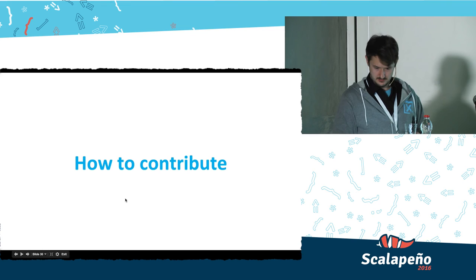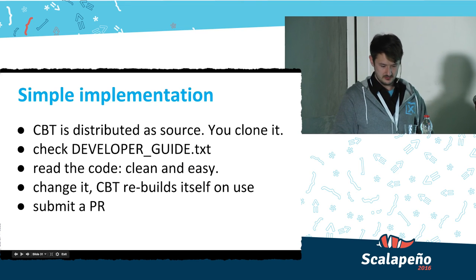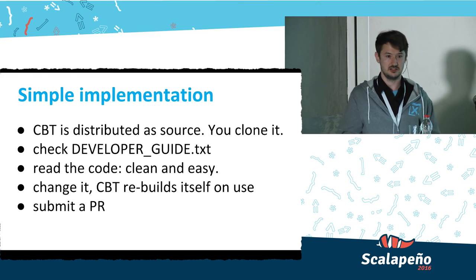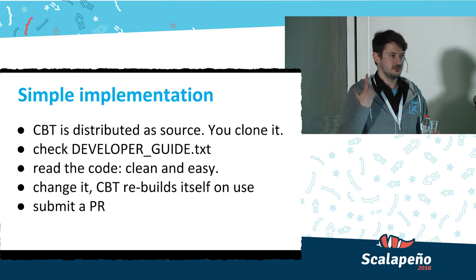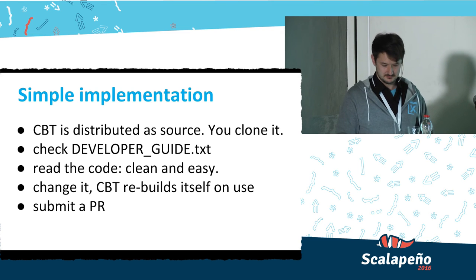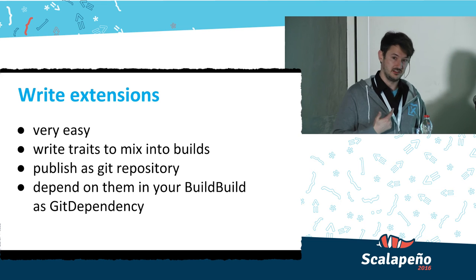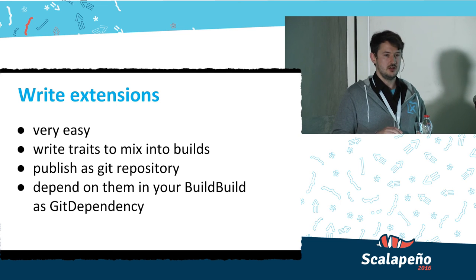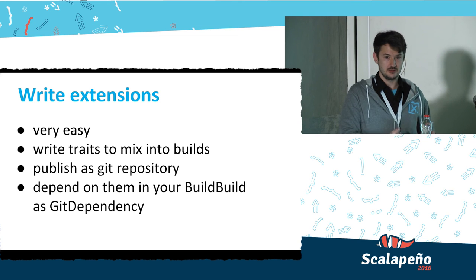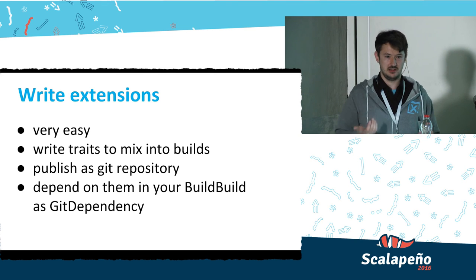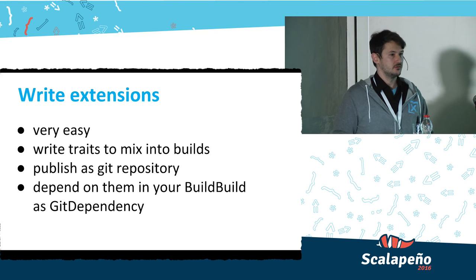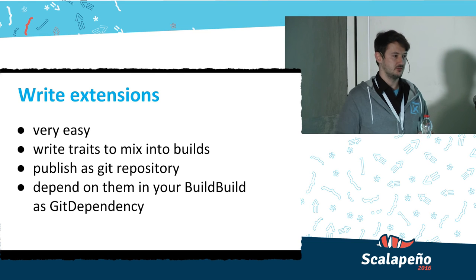Contributing is easy — it's distributed source, so just change it in your git clone and submit a pull request. Extensions are just traits consumed as source dependencies. You write a CBT build that itself depends on CBT, write a trait using stuff from the build class, push it to GitHub, and then any other build can depend on it as a source dependency, pulling in the trait to use alongside CBT.